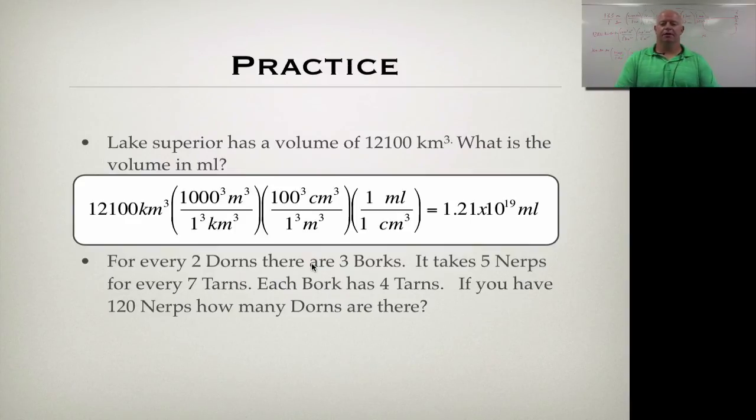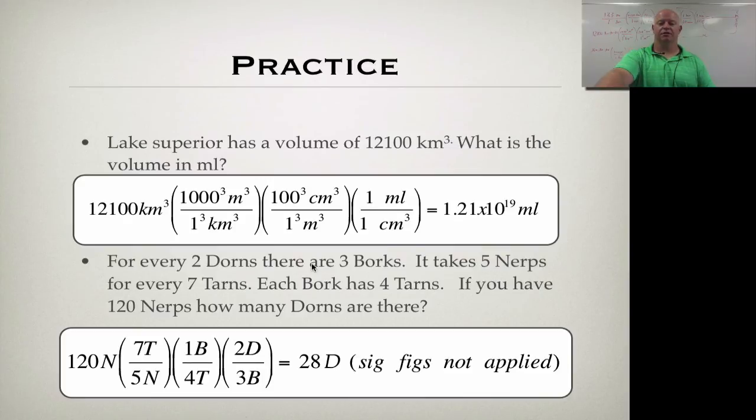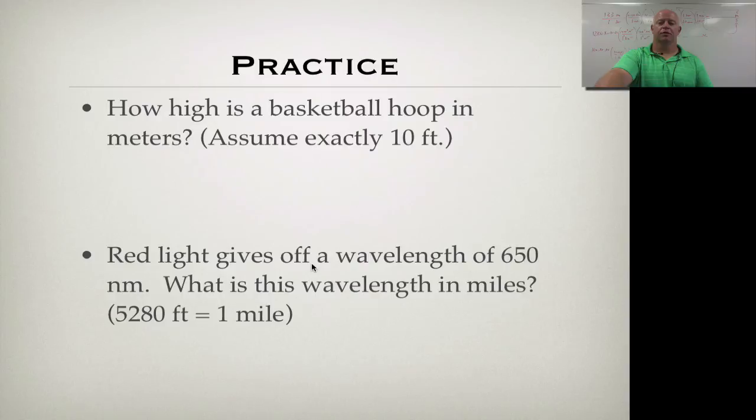All right. I want to stop here. You can go through the bottom one on your own, the Dorns and Borks kind of problem. It just takes you through one that doesn't give you measurements that you're comfortable with. Not like centimeters and inches and grams, that kind of stuff. Same process as you go through. Once you're done with that one, I'll give you the answer here. We don't apply significant figures in this one because we don't know what a Dorn or a Bork is. So we just went around it to the whole number here. There is more practice on this that you can take a look at and work your way through. So go ahead and pause the video if you want to work through these. And I'm just going to show you the key for each one.